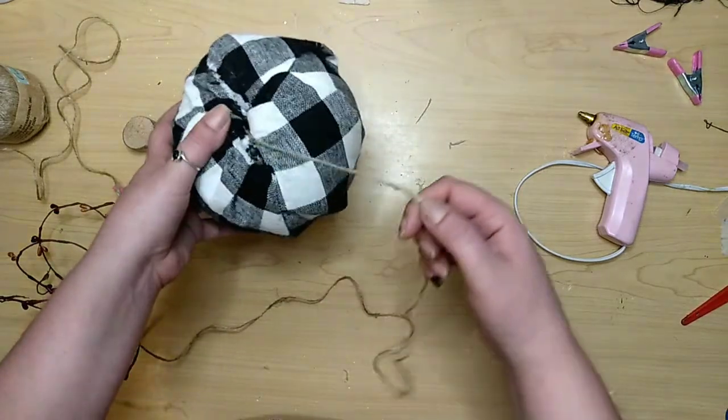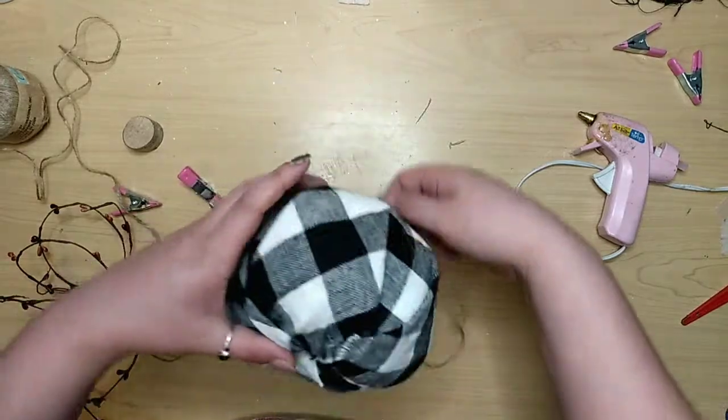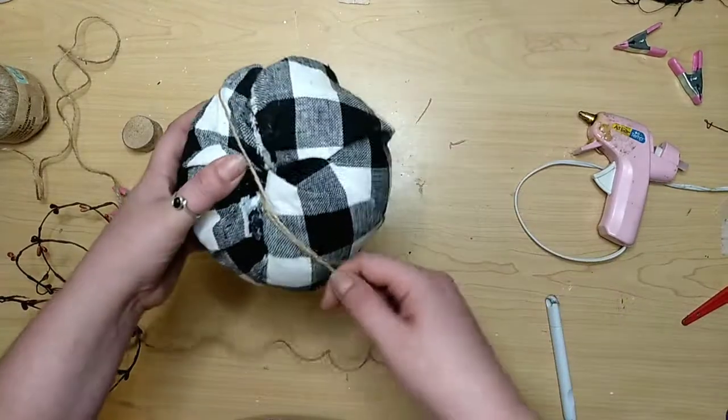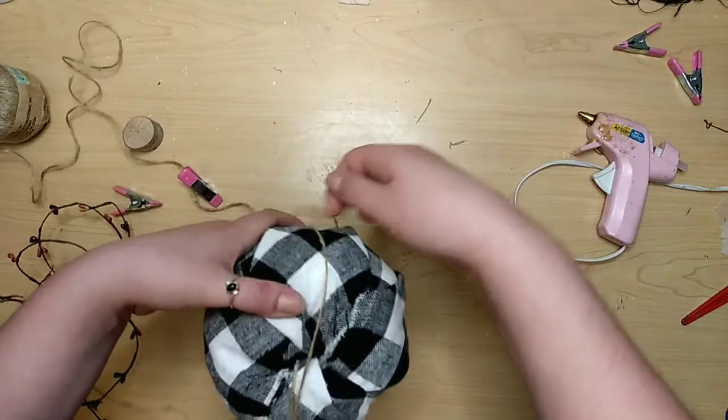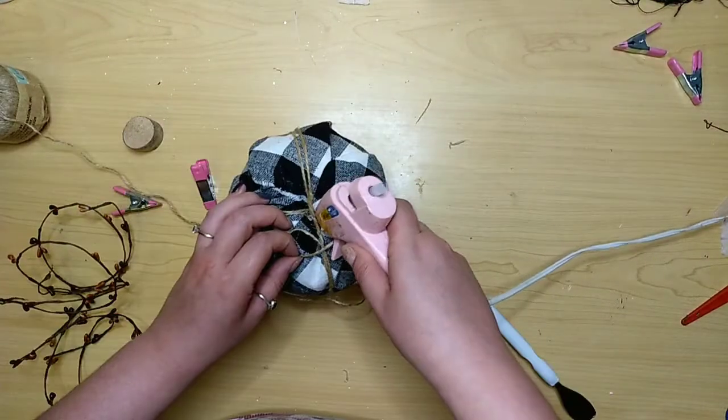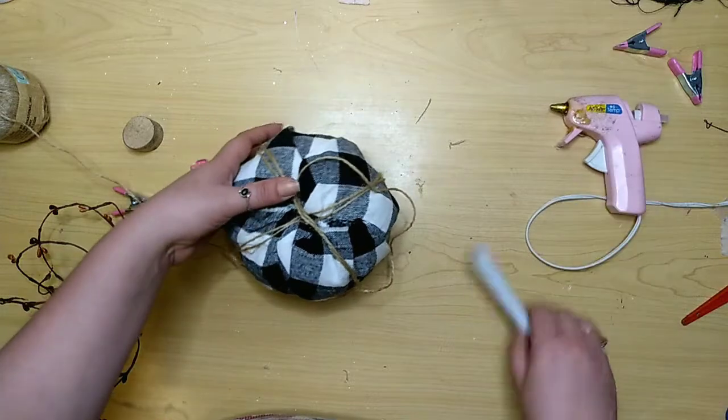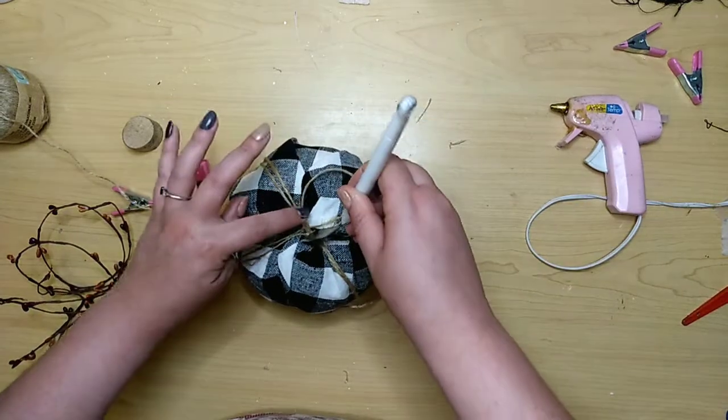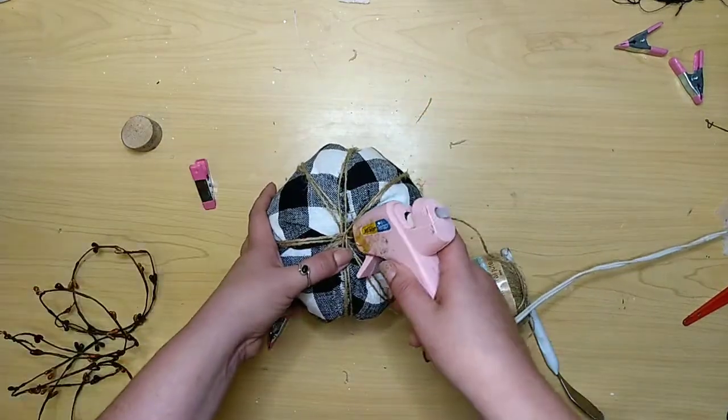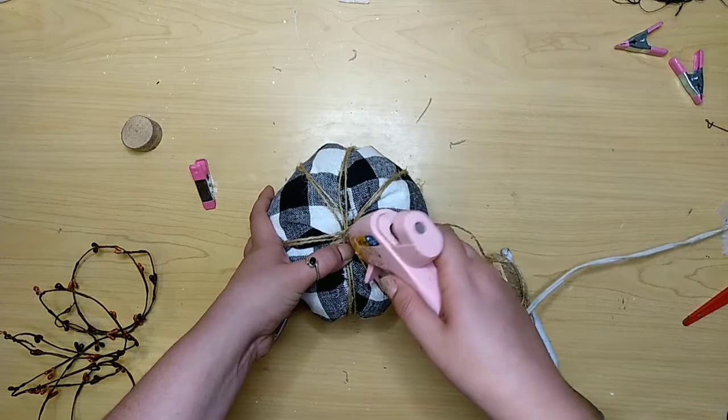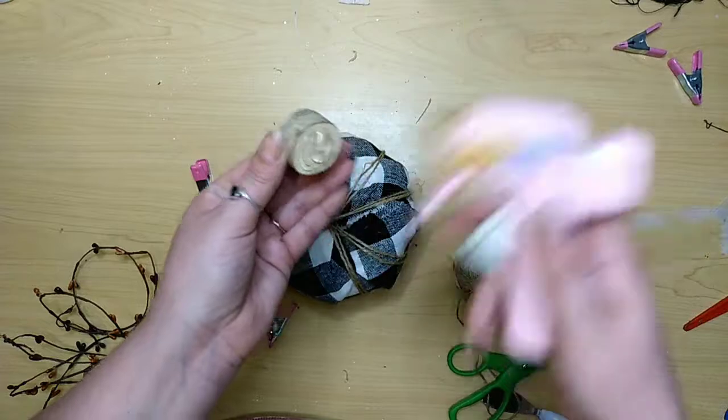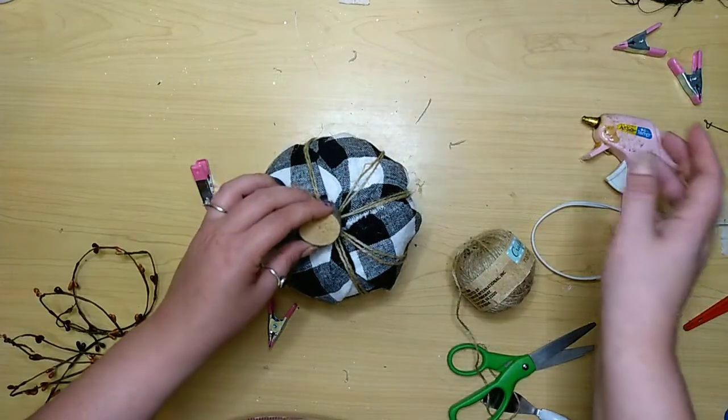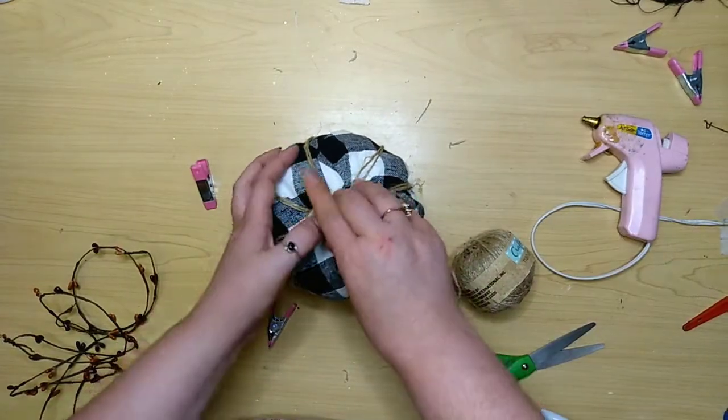I'm using jute cord because I thought it would look better with the buffalo check. I'm gluing it down in the center and wrapping it around the pumpkin, making sure to put two strands on each fold and in between each fold. I glue it in the middle when I change direction, and when I'm done I put a nice healthy amount of glue at the top and let that dry before adding this wood stem from the Dollar Tree with some more hot glue. If you don't have these, just grab a stick from outside and cut the piece you need.